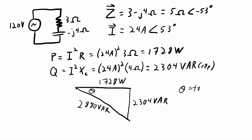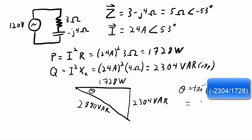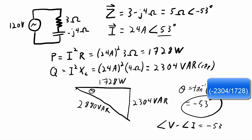The phase angle in the power triangle — between real power and apparent power — is the inverse tangent of -2304 over 1728, which equals -53 degrees. This matches the phase difference between voltage and current in the circuit (0° for voltage minus 53° for current = -53°). So the angle in the power triangle equals the phase angle between voltage and current. That wraps up this introduction to power factor as it applies to AC circuits.